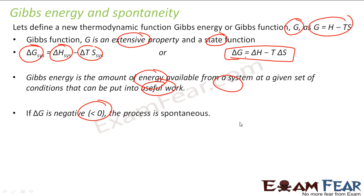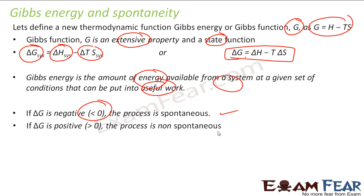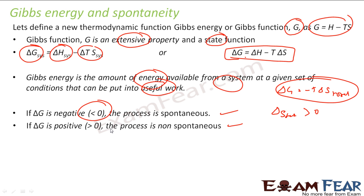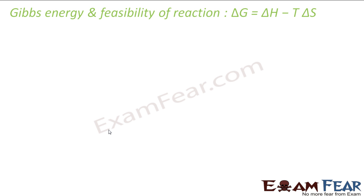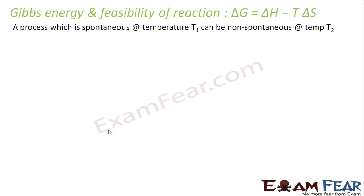Since delta G equals minus T times delta S total, the sign changes. If delta G is negative, the process is spontaneous. If delta G is positive, the process is non-spontaneous. If delta G is zero, the process is at equilibrium. With delta G we can tell the feasibility of the reaction. Also note that reaction feasibility is dependent on temperature — a process spontaneous at temperature T1 may not be spontaneous at temperature T2.